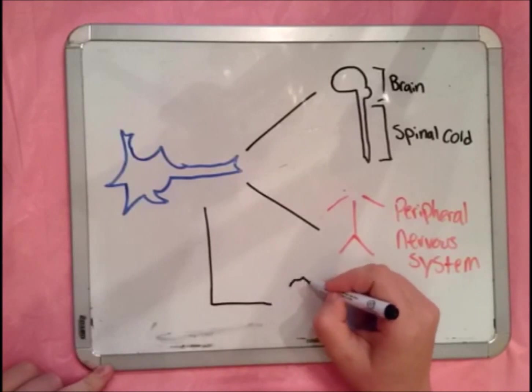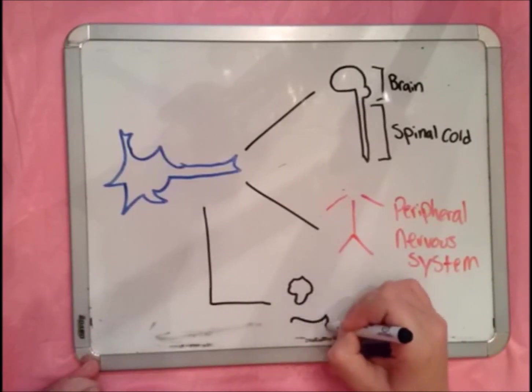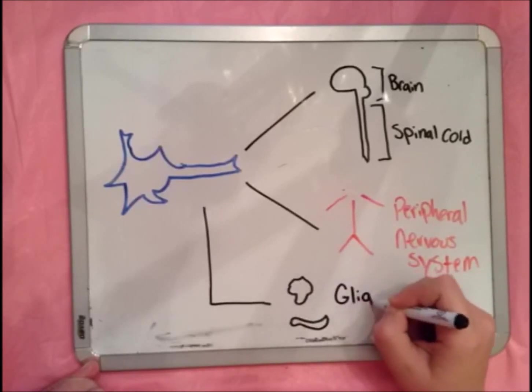Still other cells become something called glia cells. Glia cells live in the nervous system alongside neurons, guiding and eventually maintaining the neurons.